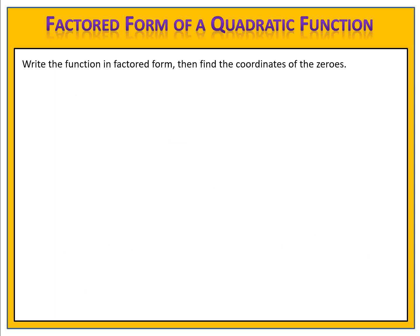Here's another example for you to try. Can you write the function y equals 3x squared minus 11x plus 6 in factored form, and then find the zeros? Please pause the video here and come back when you're ready to compare answers.